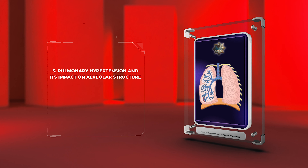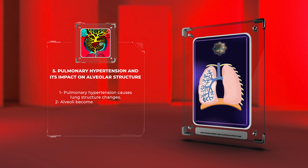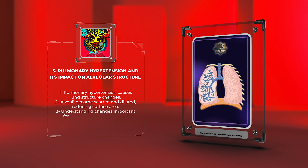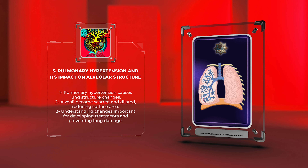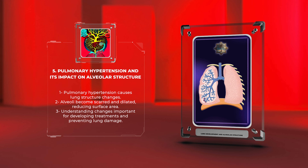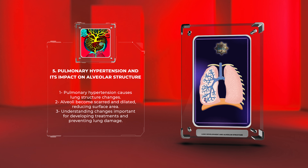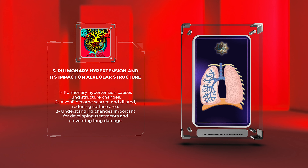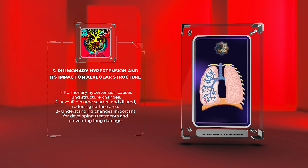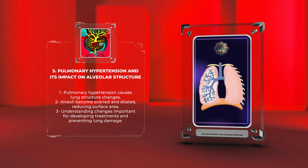Pulmonary hypertension, high blood pressure in the lung arteries, causes lung structure changes. Alveoli, responsible for gas exchange, become scarred and dilated, reducing surface area. Understanding these changes is important for developing treatments and preventing lung damage.